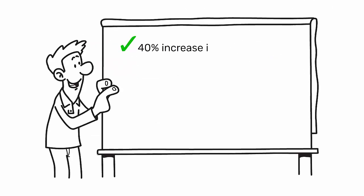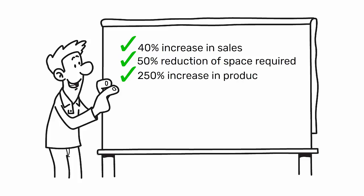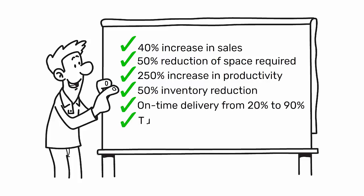40% increase in sales. 50% reduction of space required. 250% increase in productivity. 50% inventory reduction. On-time delivery from 20% to 90%. Turns from 3.4 to 15.